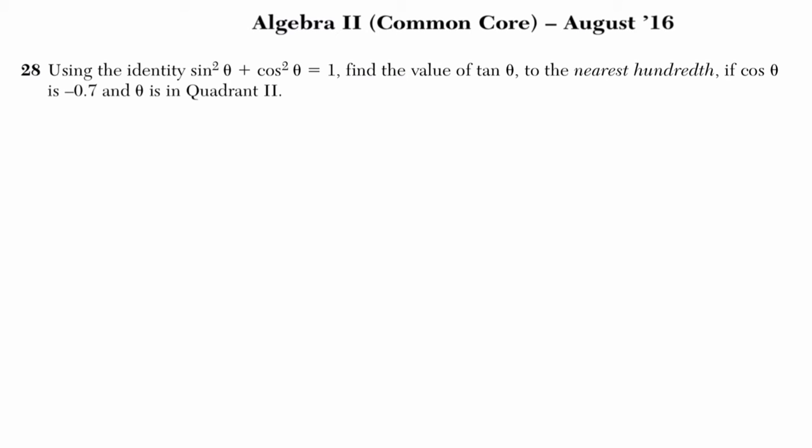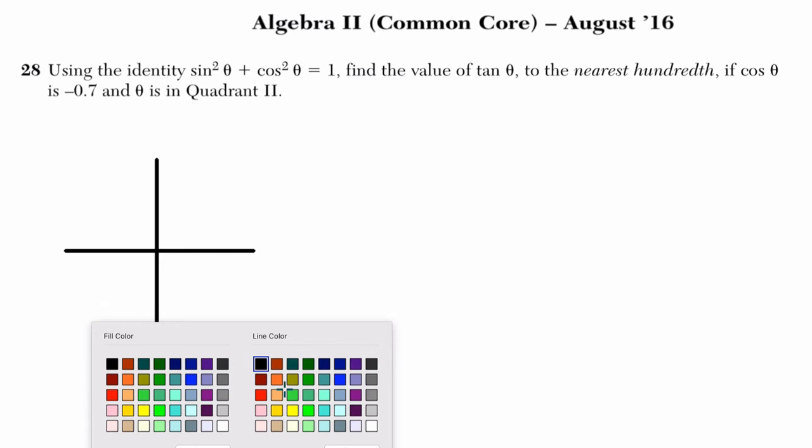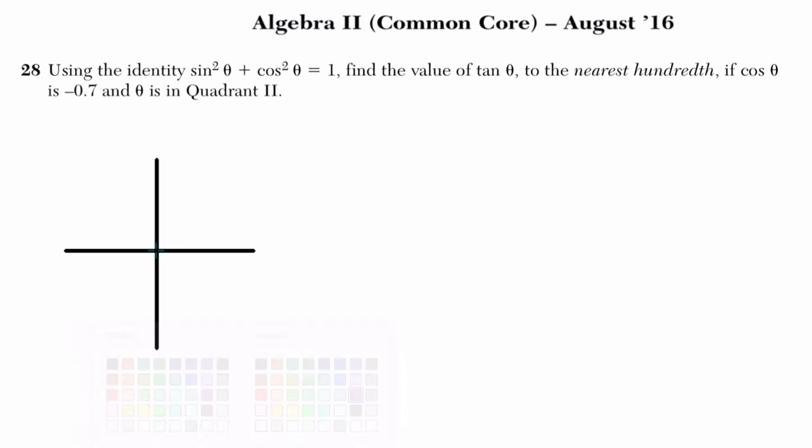Okay, we've got a lot to unpack in this problem. First of all, we're told that we're using the identity sine squared theta plus cosine squared theta equals 1. Let's remember what this means. We've got an x-axis, we've got a y-axis. Let's put a circle on there.